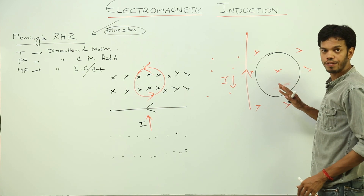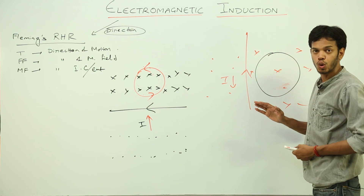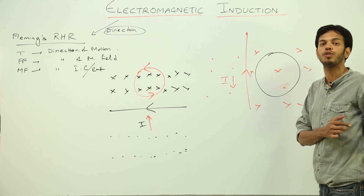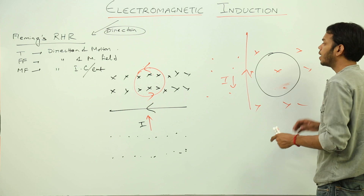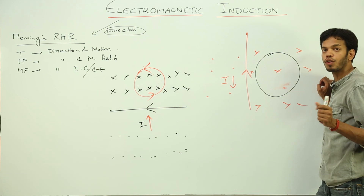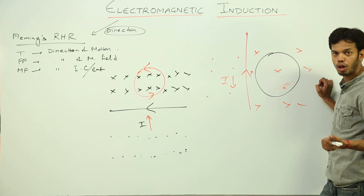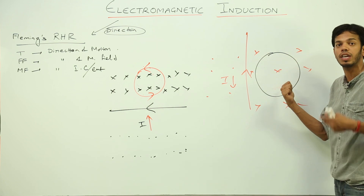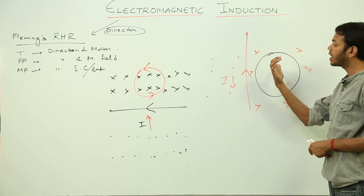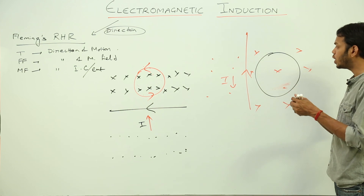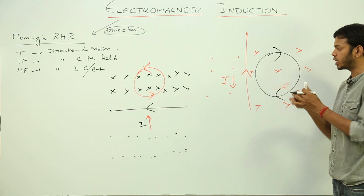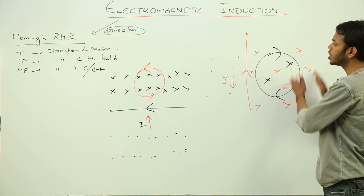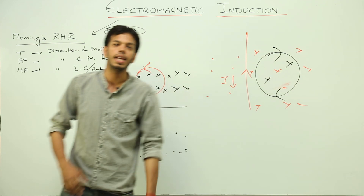So what is the induced EMF supposed to do? Since crosses are decreasing, the induced EMF must increase the number of crosses — it always opposes the cause, which is the decreasing magnetic field. The response is to oppose: if magnetic field is decreasing, it will try to increase it. The induced current must flow in the clockwise direction to create more crosses, thereby opposing the cause responsible for its production. That is how you apply Lenz's law.